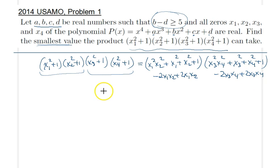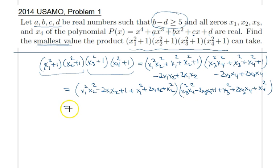So 2x₃x₄. Let me just go ahead and organize it in a nice way. So I will have x₁ squared x₂ squared minus 2x₁x₂ plus 1, plus and then I will have the other term here, so x₁ squared plus 2x₁x₂ plus x₂ squared. I will pretty much do the same thing for the other expression as well.